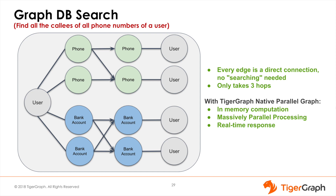Now let's look at how the same query works in a graph database like TigerGraph. Starting from user001, we find all of user001's phone numbers — rather than looking into a table, we already have a set of direct links to those phone numbers. This gives us a set of phone vertices: that is one hop in our query. Then we want to know who was called by these phones, which is just following the direct links from each of the selected caller phones to their callee phones. The links and edges have arrowheads — they are directed edges, because there is a clear directionality for who called whom. If you have a parallel graph database, we can collect the callee phones quickly using parallel processing. We now have a set of callee phone vertices: hop number two.